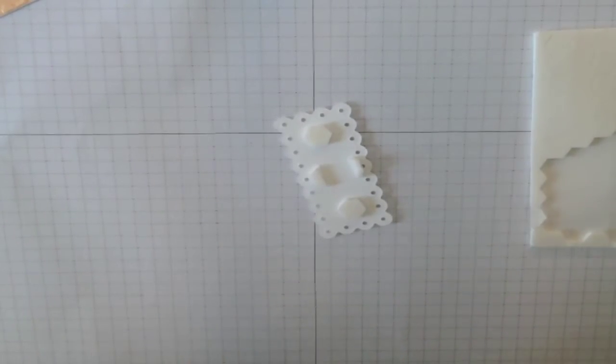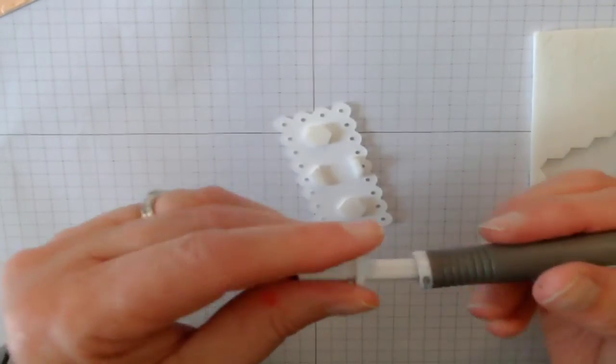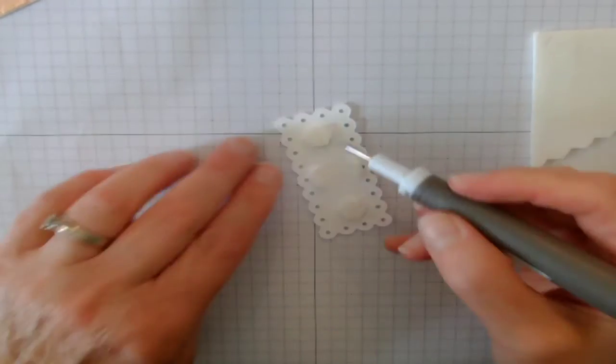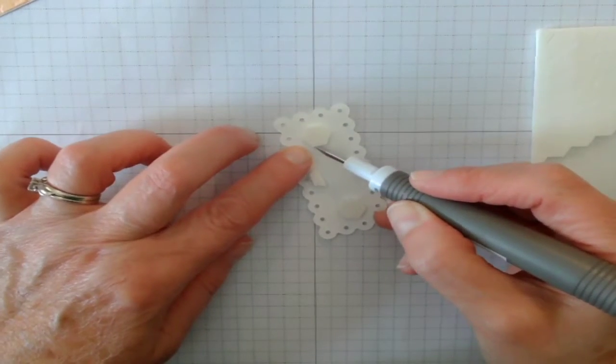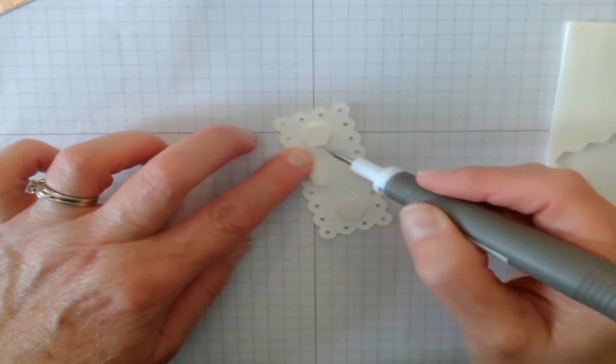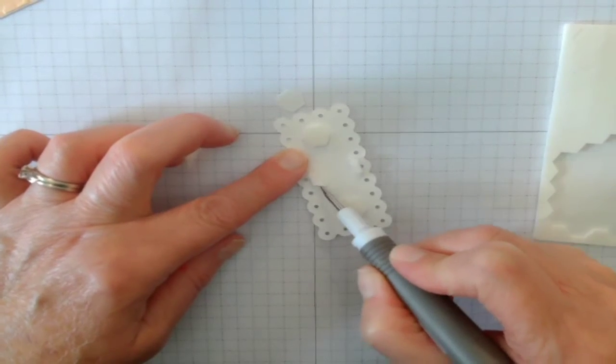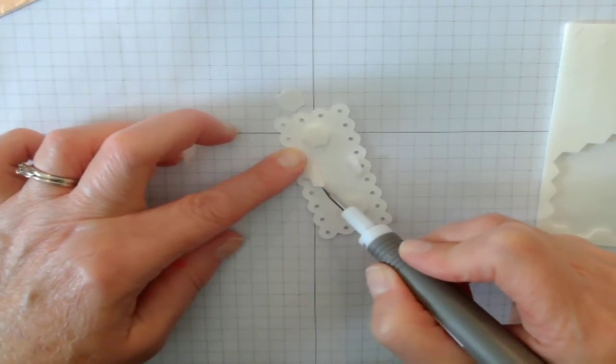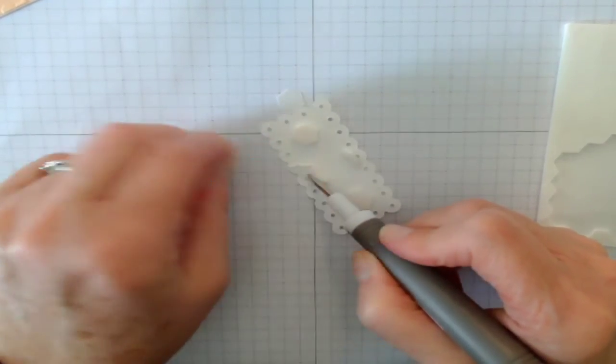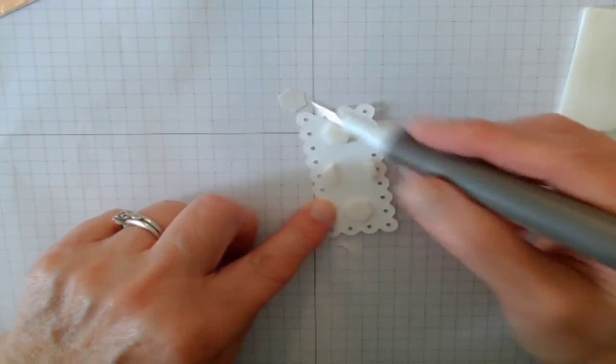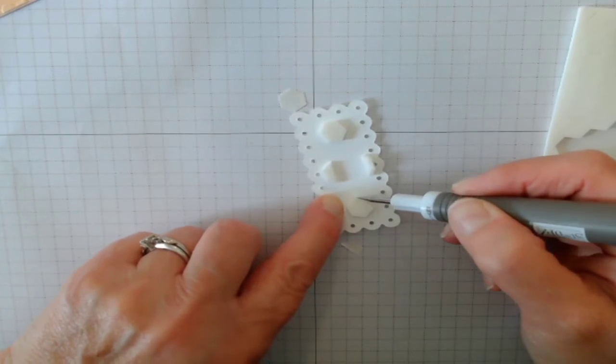You can use the pointy end of the pick tool like some people do, and they use that to get the paper off the top edge. And then that way you don't get your hands all sticky from that.